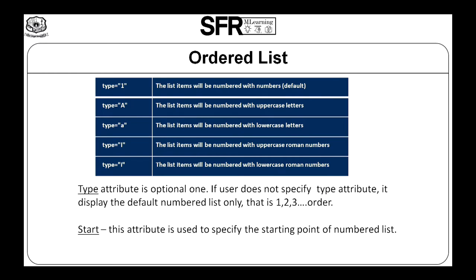If the user uses Type Attribute value 1, the list items will be numbered with numbers. If the user uses capital letter A, the list items will be numbered with uppercase letters. If the user uses small letter a, the list items will be numbered with lowercase letters. If the user uses capital Roman numeral, the list items will be numbered with uppercase Roman numbers. If the user uses small Roman numeral, the list items will be numbered with lowercase Roman numbers. The Type Attribute is optional; if not specified, it displays the default numbered list in 1, 2, 3 order.